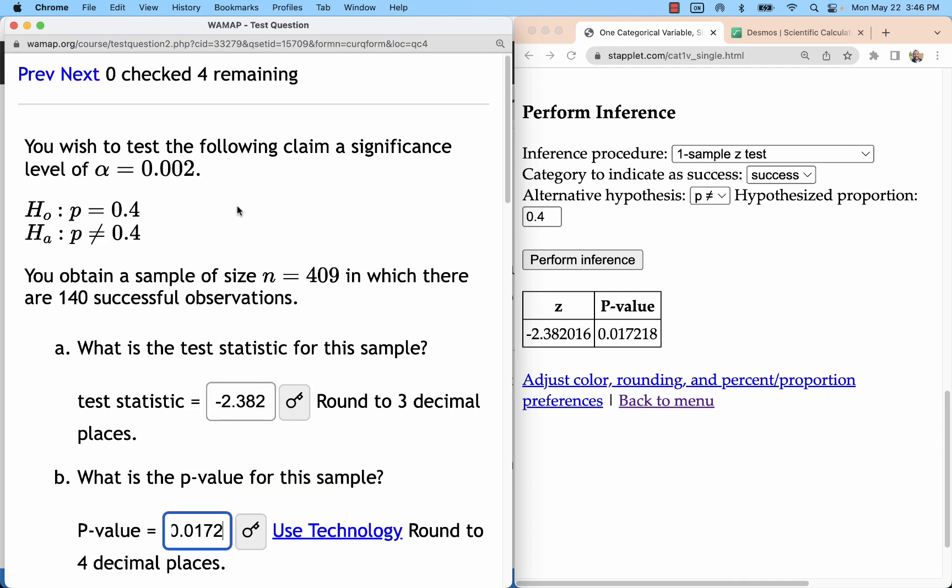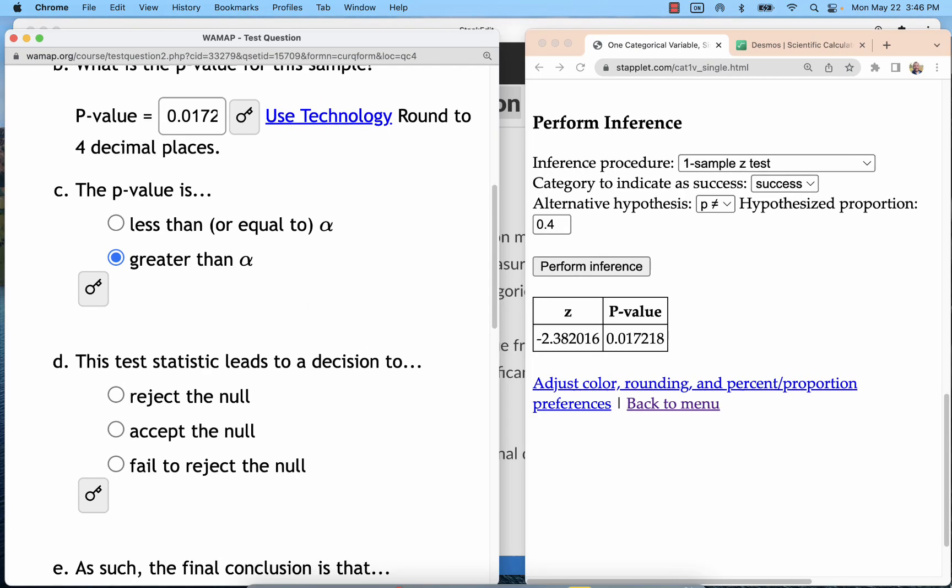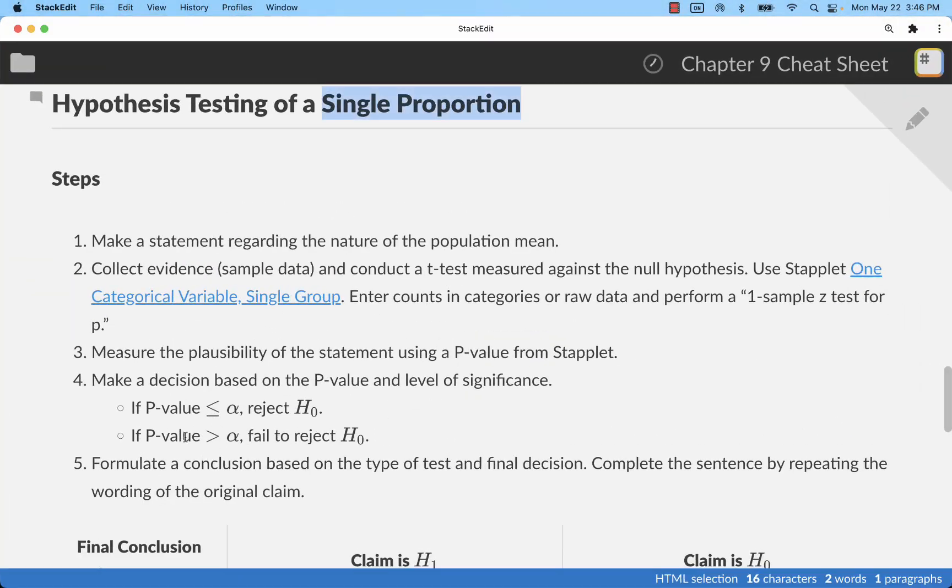Which, compared to alpha, is larger. And, anytime the p-value is larger than alpha, we fail to reject the null hypothesis.